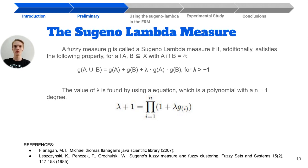In this study, we propose the usage of the Choquet integral aggregation function combined with the Sugeno lambda fuzzy measure, as mentioned earlier. The Sugeno was implemented with Java using the Flanagan's library to solve the polynomial equation.